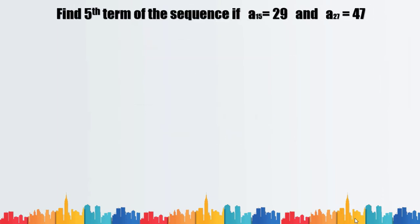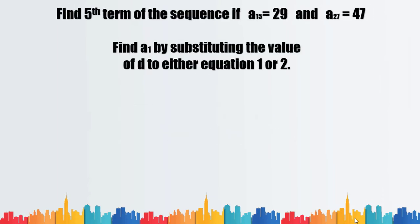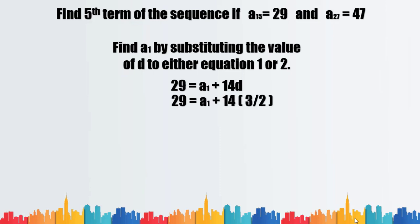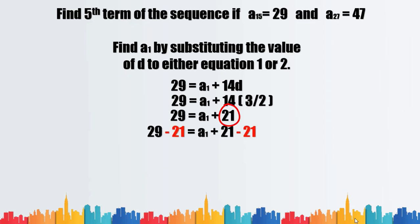Third, we find the value of a sub one by substituting d equals 3/2 into equation 1. We have 29 equals a sub one plus 14 times (3/2). Solving, we subtract 21 from both sides to find a sub one. The final answer is a sub one equals 8.